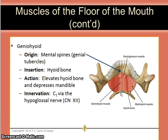Its action is to elevate the hyoid and depress the mandible. It is innervated via C1 via the hypoglossal nerve, which is cranial nerve 12. This shows a superior view of the mylohyoid muscle. Note that the sling is formed by the mylohyoid and its origin in the internal ridge of the mandible.